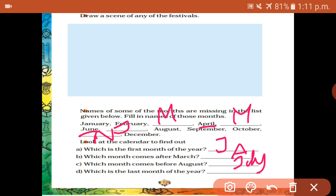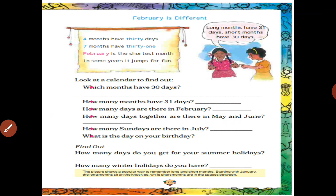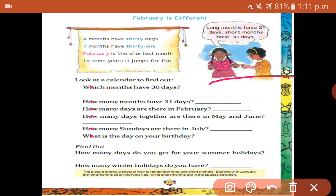Which is the last month of the year? December. February is different — it is the shortest month. Long months have 31 days, short months have 30 days. Four months have 30 days and seven months have 31 days. Which months have 30 days? April, June, September, and November.